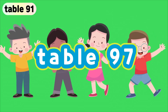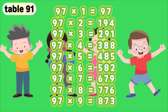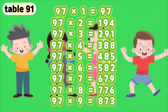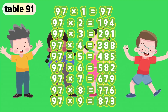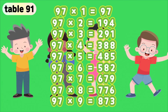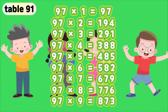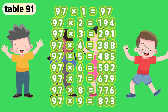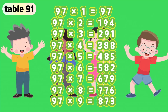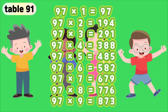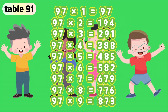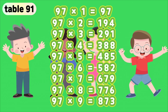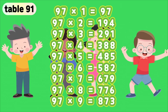Table 97. 97 times 1 is 97. 97 times 2 is 194. 97 times 3 is 291. 97 times 4 is 388. 97 times 5 is 485. 97 times 6 is 582. 97 times 7 is 679. 97 times 8 is 776. 97 times 9 is 873.